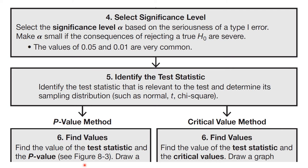We do not choose the level of significance after we've run the test — that would be unethical even if done ignorantly. Whether out of ignorance or intentional, we must remember: choose the level of significance in advance, then run the test. Your homework will give you those numbers, so don't stress. In an actual study, you should question whether anyone else chose the number after the fact.